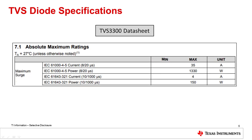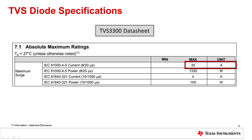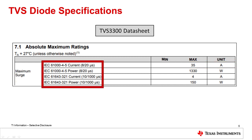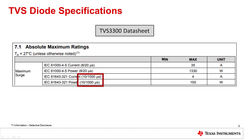The first important limitation is the max surge current, or IPP. This specification defines the maximum amount of current that the diode can absorb before it will overheat and break. The current that a TVS diode can sustain depends on the length of the current pulse, so IPP is always defined relative to a characteristic waveform. Sometimes this reference waveform is the 20 microsecond waveform defined in IEC 61000-4-5, but more commonly it's a 1000 microsecond waveform used for specifying TVS diodes.